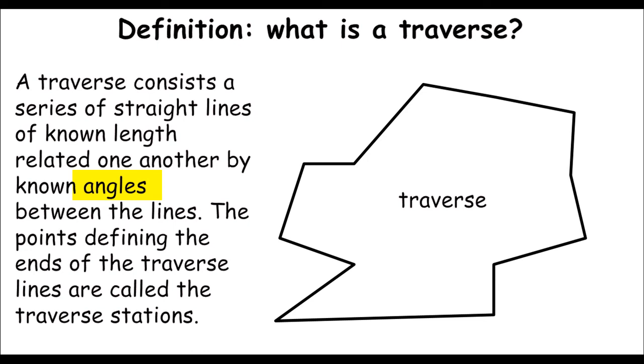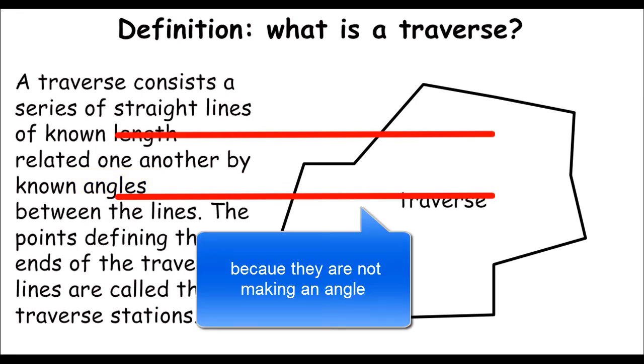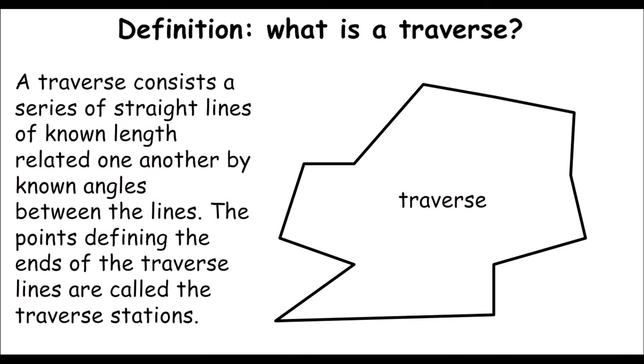This means the series of lines should make angles. If two lines are parallel to each other, this is not a traverse. The points defining the end of the traverse lines are called the traverse stations.